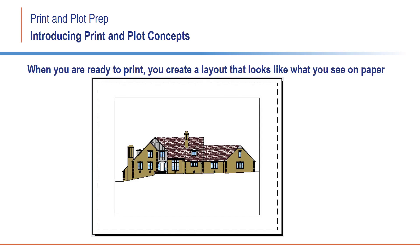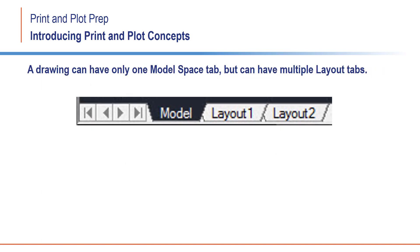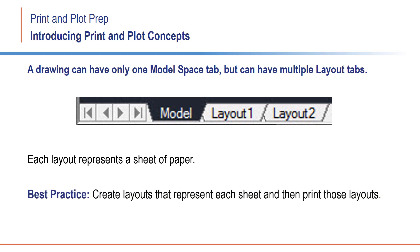Then, when you are ready to print or plot, you create a layout that looks like what you want to see on paper. Although each drawing file can have only one model space tab, each drawing can have as many layout tabs as you want. Each layout represents a sheet of paper. While it is possible to print from model space, the best practice is to create one or more layouts that essentially represent exactly what you want to appear on each sheet, and then print those layouts.